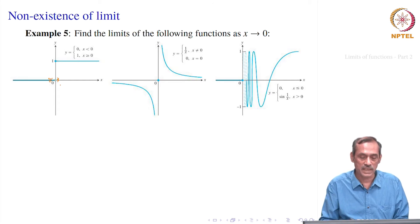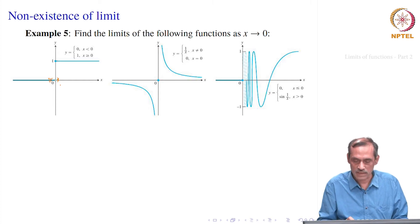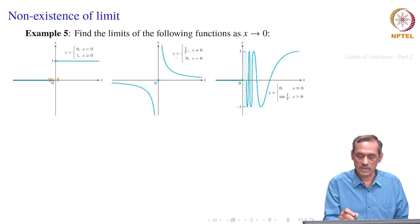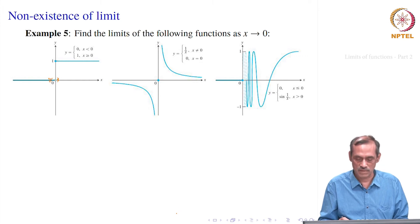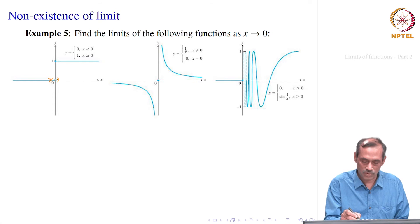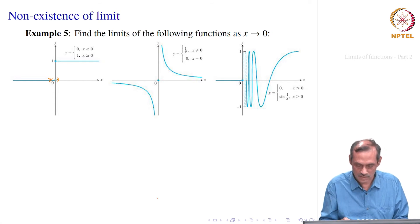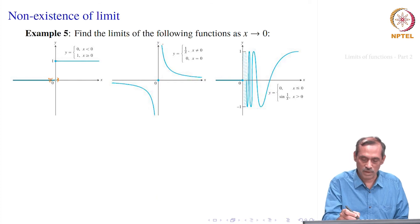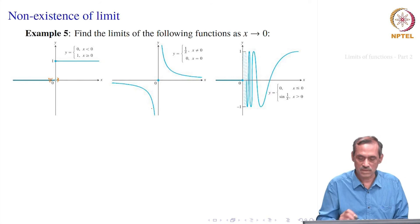Therefore, this does not have a limit as x goes to 0. Let us look at the second picture — there we have the function y equal to f(x), which is 0 at x equal to 0, and it is 1 divided by x when x is not equal to 0. At 0, it is 0 — shown as a filled circle. On the other side, it is 1/x.